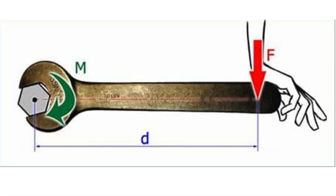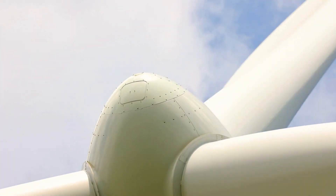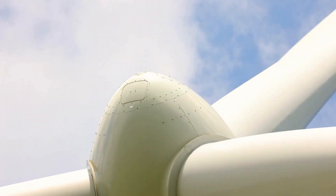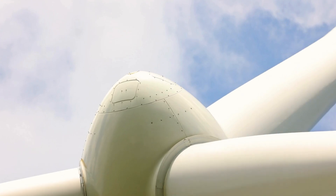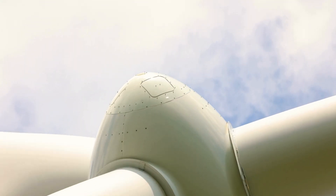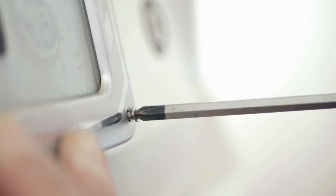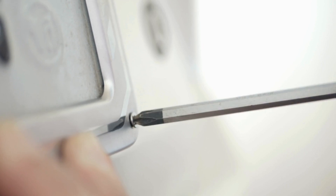Torque is the rotational equivalent of a linear force. It's a dynamic force that causes an object to rotate or undergo angular acceleration. The key idea is that it causes a change in an object's angular momentum, resulting in motion. Examples include using a wrench to turn a bolt, an engine rotating a car's wheels, or a person opening a door.